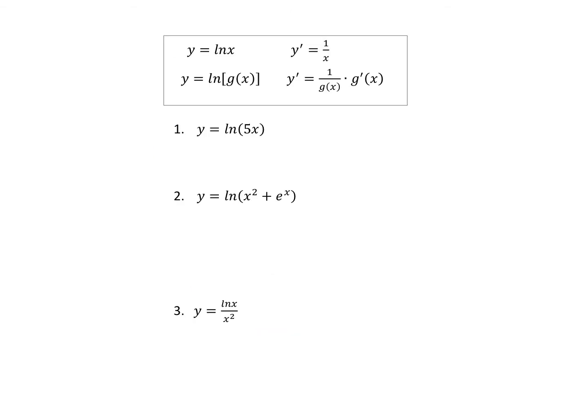So the derivative of y equals ln(x) is y prime equals 1 over x. We can also look at y equals ln(g(x)), whose derivative is 1 over g(x) times the derivative of g(x). For example, if y equals ln(5x), then y prime is 1 over 5x times 5, which reduces to 1 over x — the 5s cancel.